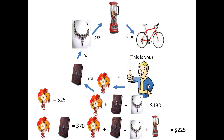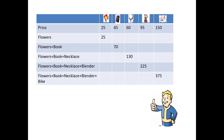Flowers, book, necklace, and blender: $225. Now, with the cycle and stuff, that's a pretty visual but kind of messy — you don't really have anything organized. So we discovered spreadsheets. We can make a table with all this information that makes it easy to understand. Here's the price of each item individually. If I want just the flowers, it costs $25. Flowers and book: $70. Flowers, book, and necklace: $130. Book, necklace, and blender: $225. All five things: $375. This is a nice little reference sheet.